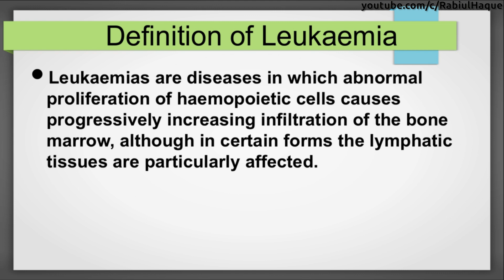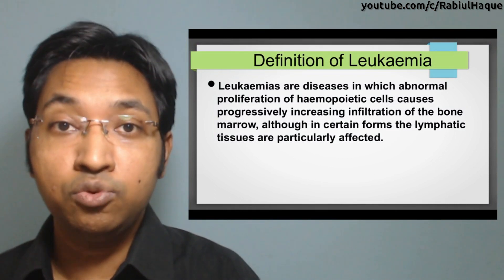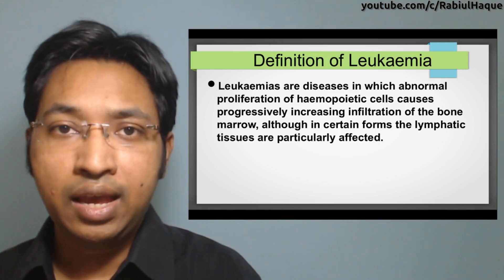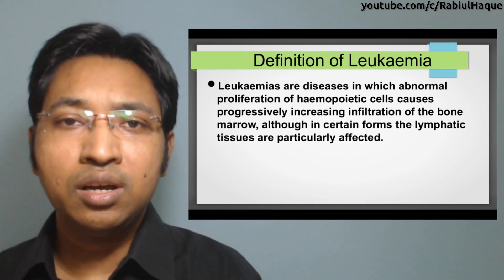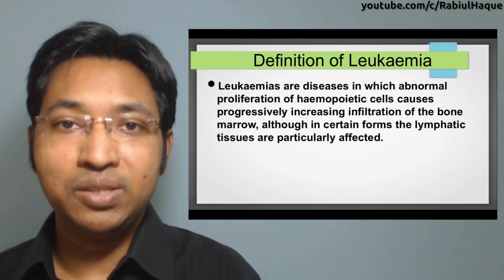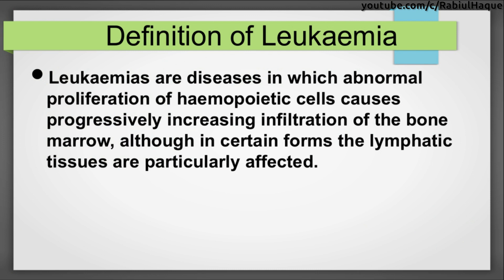Hemopoietic cells are the stem cells and progenitor cells from which we get mature blood cells; in adults they are located in the bone marrow — think of them as the grandfathers of mature blood cells. In leukemia there is abnormal proliferation of those hemopoietic cells infiltrating the bone marrow, and in certain forms the lymphatic tissues are particularly affected as well.